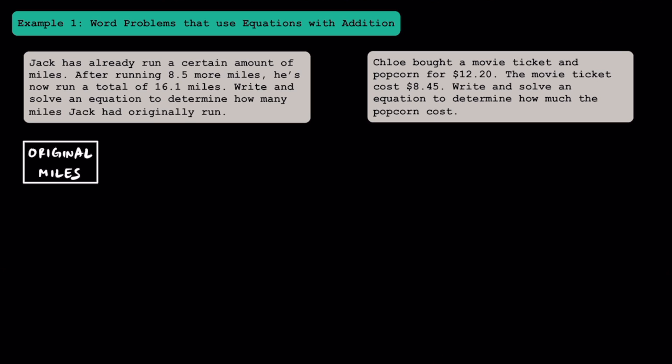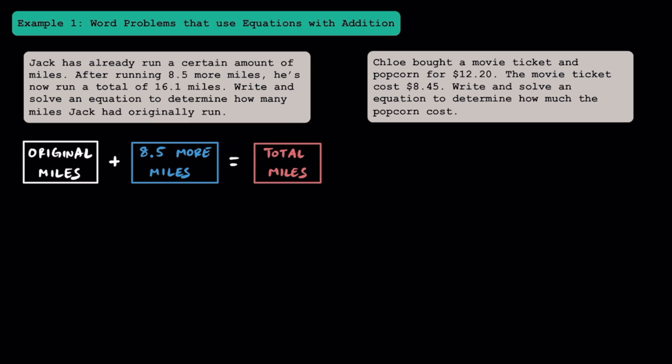Setting up a model here, we know that Jack originally ran a certain number of miles, then we're given that Jack ran 8.5 more miles. We're going to add that onto it because it's additional mileage. Adding what he originally ran plus the 8.5 more miles, we should get the total miles that Jack has run. One key word to pay attention to is 'total,' which typically means you're adding things together. Another key word is 'more,' which is associated with addition, while 'less' is more associated with subtraction. We use equations to work backwards to solve for things we don't know, so I'll use the letter M as a variable to represent the number of miles Jack originally ran.